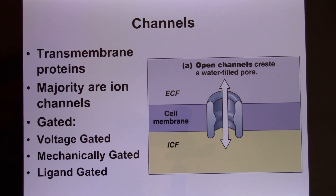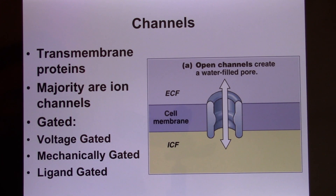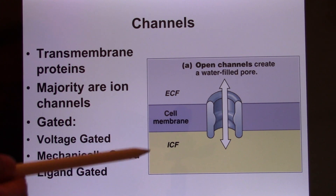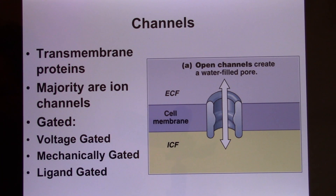Voltage-gated ion channels sense voltage changes — when there's a voltage change, they open. We'll discuss these in more detail when we talk about neurons.